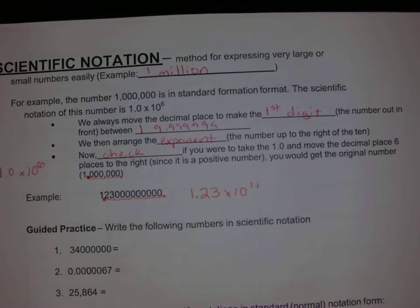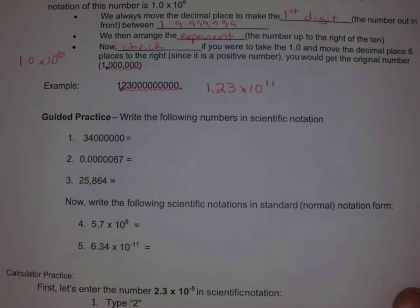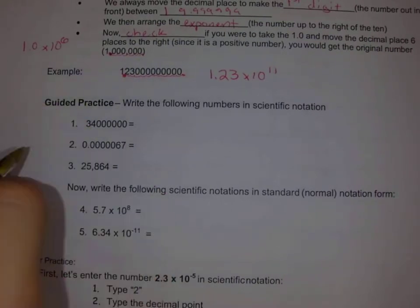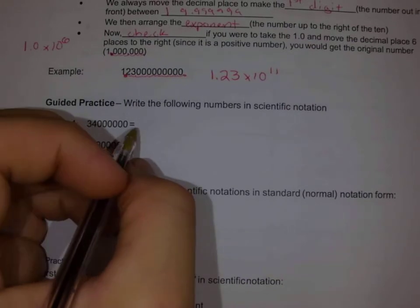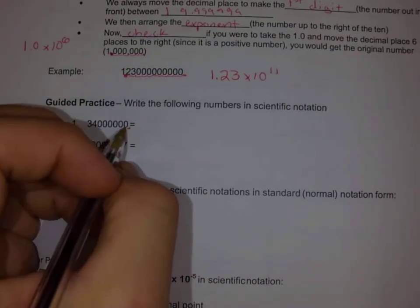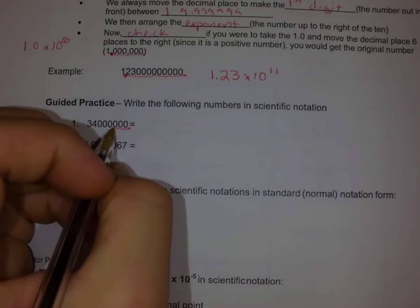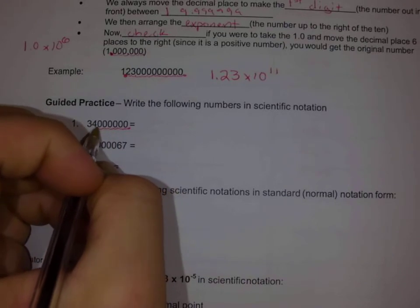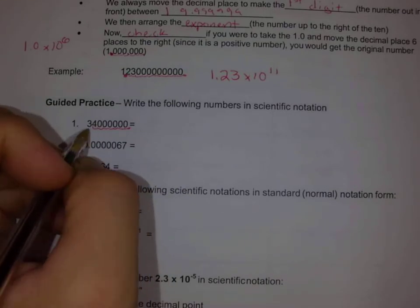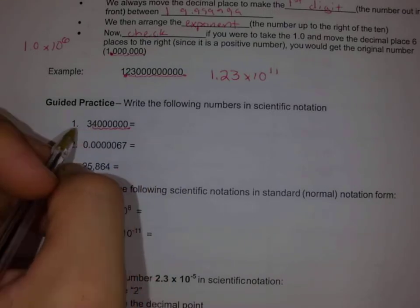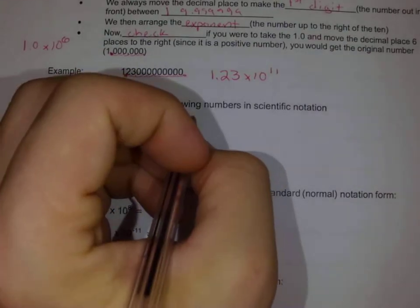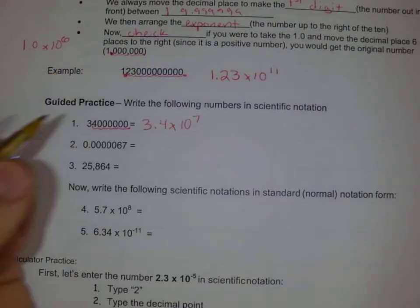Let's go through some more guided practice. This number has a lot of zeros. Starting where my decimal is, I count 1, 2, 3, 4, 5, 6, 7 — I move it 7 times and I've got one digit before the decimal place — so I'll write 3.4 times 10 to the 7th.